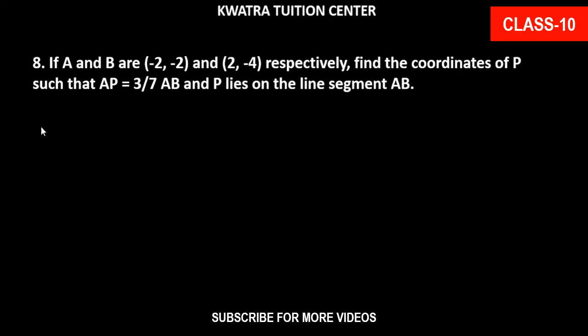So we have a line or two points. We have coordinates of A and B and a point P. A is (-2, -2), B is (2, -4), and in this line there is a point P. Now we need to find the coordinates of P, so we have X and Y.